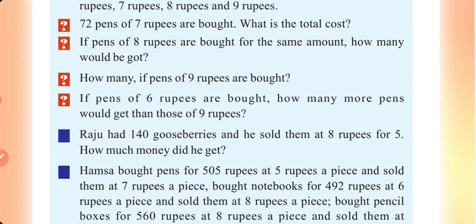Raju had 140 gooseberries and he sold them at 8 rupees for 5. How much money did he get?